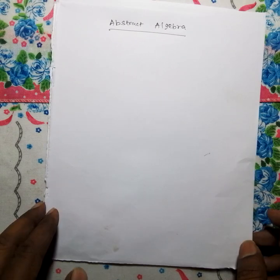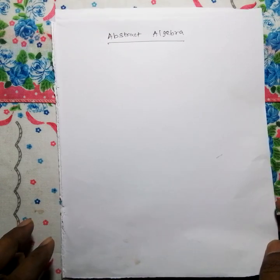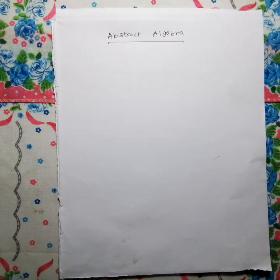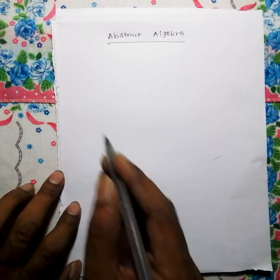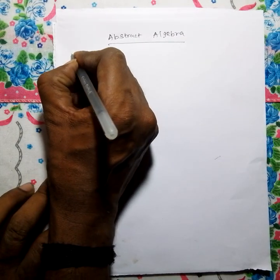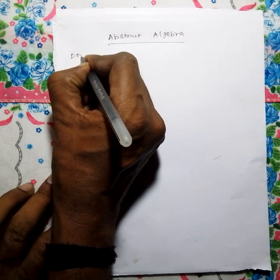So, in abstract algebra, the first chapter is a group. Let's talk about definitions. The first definition is binary operation.